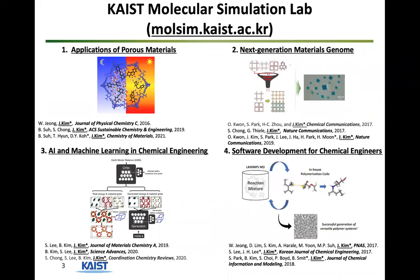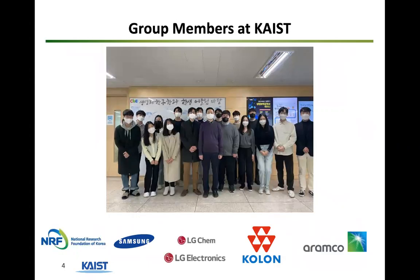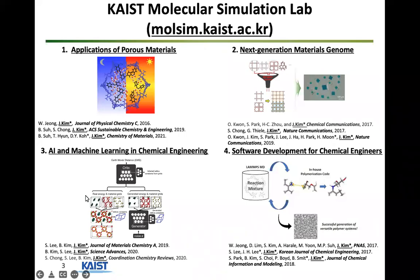My research career can be divided into four different subcategories. First is where we look into applications of porous materials, working closely with experimentalists and concentrating on modeling one specific material with very interesting properties. The second type is next-generation materials genome, where instead of doing one material we do thousands or sometimes millions of materials, screening for the best properties and collaborating with experimentalists to synthesize the best materials. The third subcategory is AI and machine learning, which will be covered in detail in this talk.